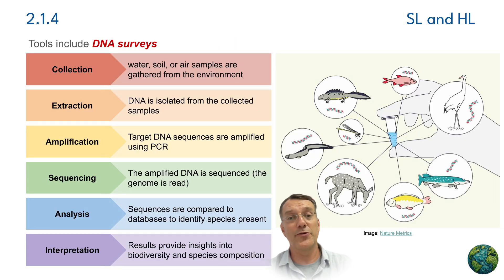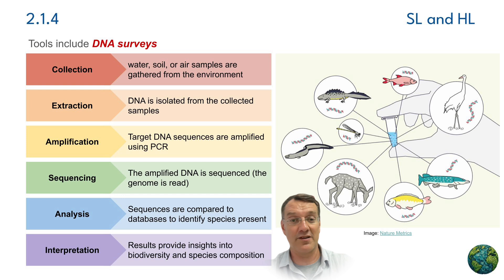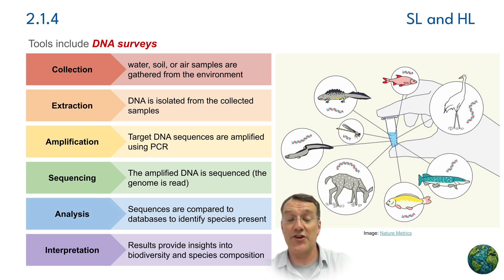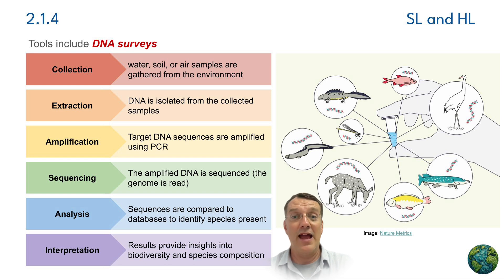Modern taxonomy also utilizes DNA surveys, where genetic material is analyzed to identify species. This process involves collection, extraction, amplification, sequencing analysis, and interpretation of DNA samples. It's pretty cool because we can simply collect a sample of soil or water